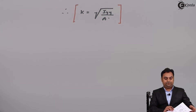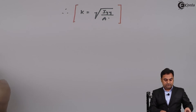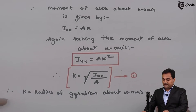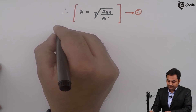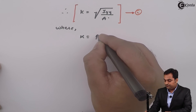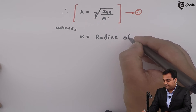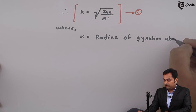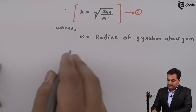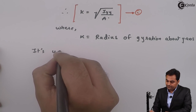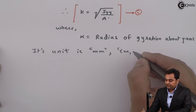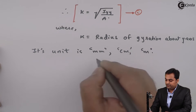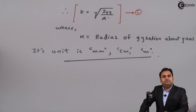Previously in equation 1 we had the radius of gyration about the x-axis; now in equation 2 we have the radius of gyration about the y-axis. Its unit, since it is a radius, will be either in terms of mm, centimeter, or meter. Here in this video we have seen the definition and concept behind radius of gyration.